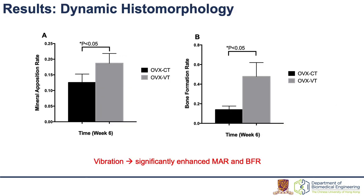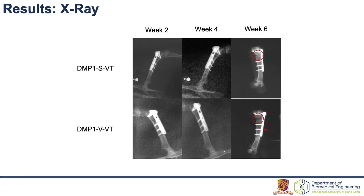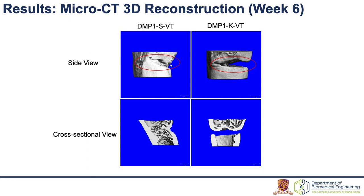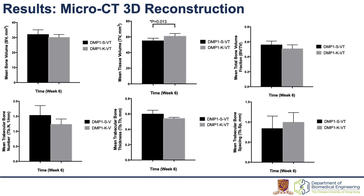Here come the results. MAR and BFR were significantly enhanced in the vibration group as shown in the graph. Also, in week 6, the fracture gap was wider for the DMP1 knockdown group, and the normalized intensities were higher in DMP1 scramble with statistical significance. 3D models were reconstructed and found that the fracture gap was filled in scramble but not in knockdown. For bone volume, trabecular bone number, and thickness, DMP1 scramble was higher than DMP1 knockdown. But tissue volume and trabecular bone spacing of DMP1 knockdown were instead higher.